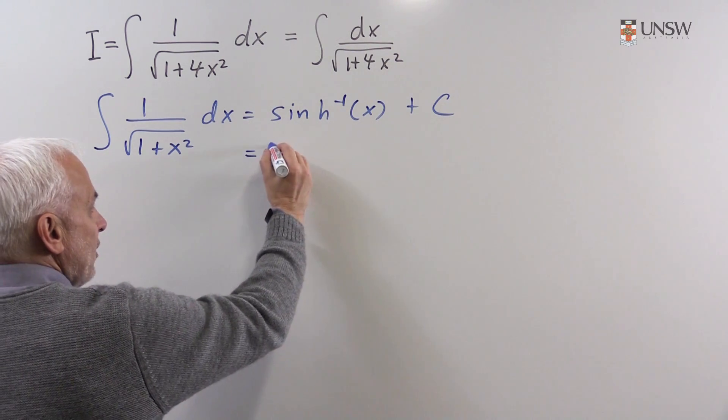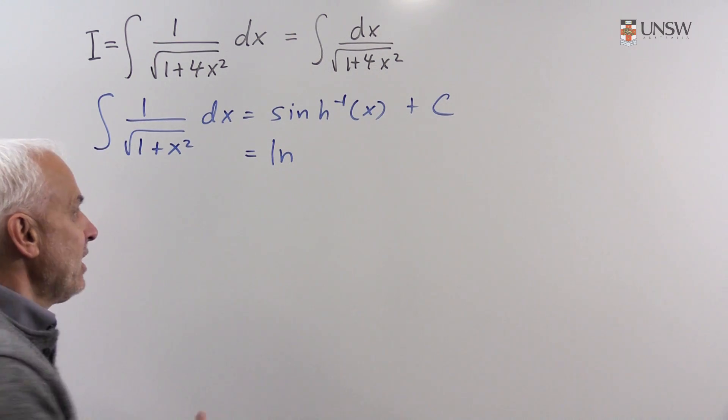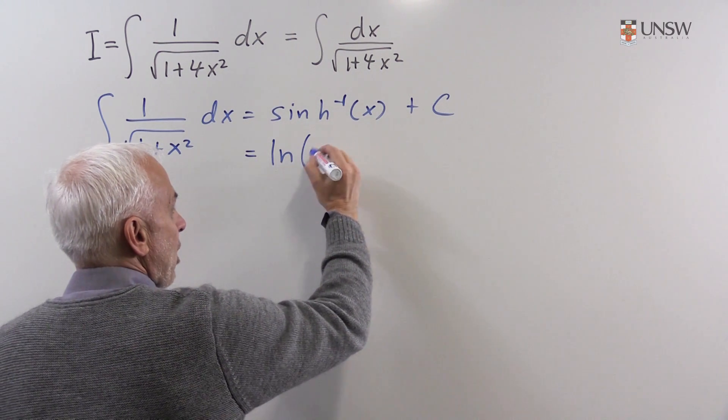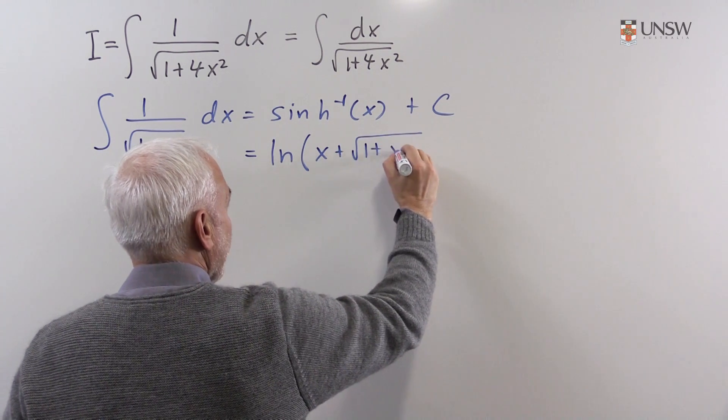And in fact there's an alternate form where this inverse hyperbolic function is expressed in terms of a logarithm. It's log of x plus square root of 1 plus x squared.